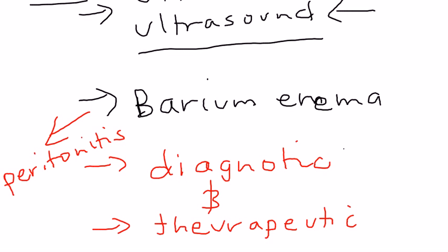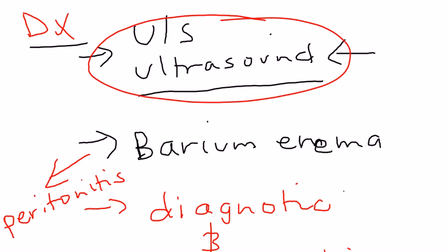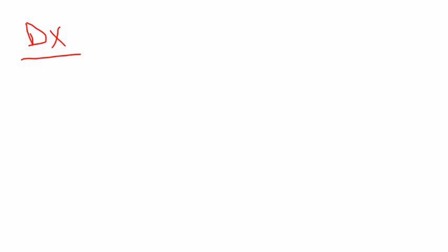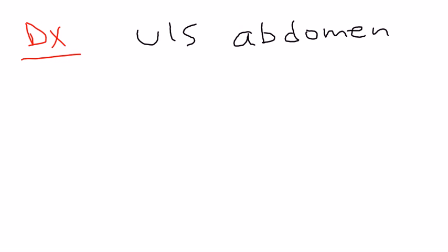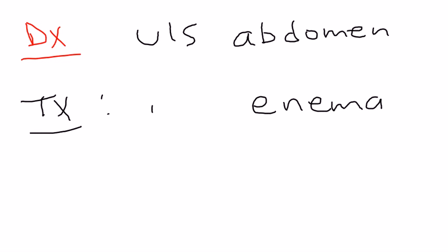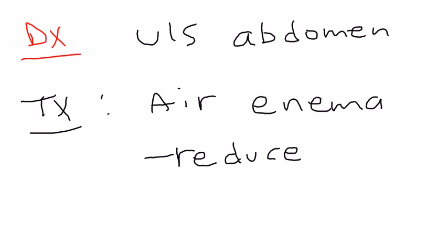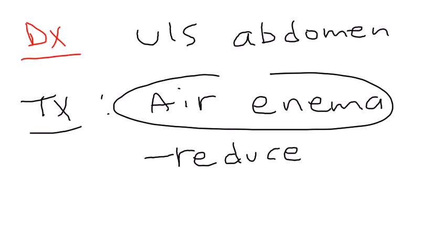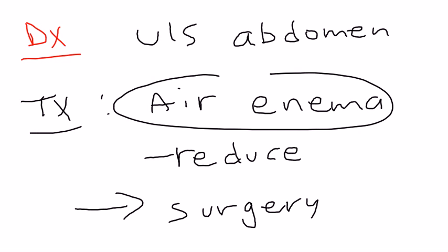The best way to diagnose intussusception is ultrasound. Once diagnosed, treatment involves giving an air enema, which does not carry the risk of perforation like barium does. About 75 to 90% of cases are reduced with the air enema. If unsuccessful, you proceed to surgery to remove the affected segment of the colon.